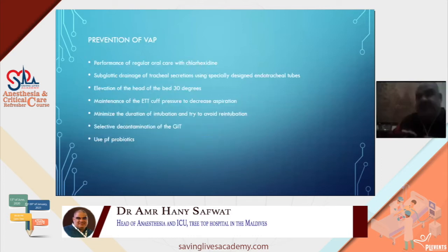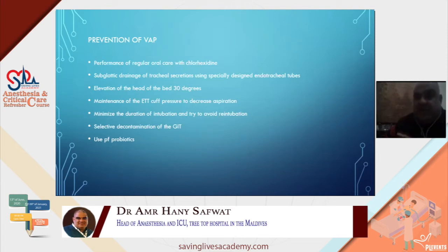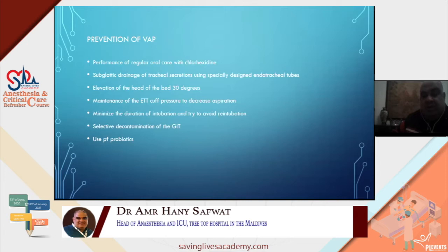Prevention of VAP is easy if we follow the guidelines: perform regular oral care with chlorhexidine, subglottic drainage of tracheal secretions using specially designed endotracheal tubes, prefer non-invasive ventilation when possible, and use of probiotics. All these measures can help decrease the incidence of VAP dramatically. VAP is a major problem in the ICU causing high morbidity and mortality — avoiding it is very important.